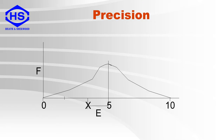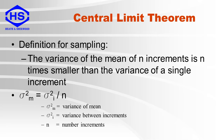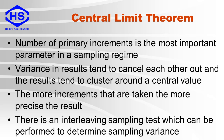Here is an example of precision. You can see the true value is 5, plus or minus a variance. For sampling, the variance of the mean of n increments is n times smaller than the variance of a single increment. The variance of the mean is defined as the variance between increments divided by the number of increments. This means that the number of primary increments is the most important parameter in a sampling regime. The variance in results tends to cancel out, and results tend to cluster around the central value. The more increments that are taken, the more precise the result.